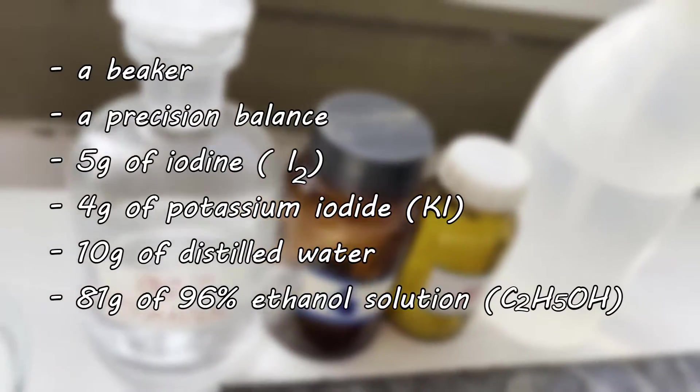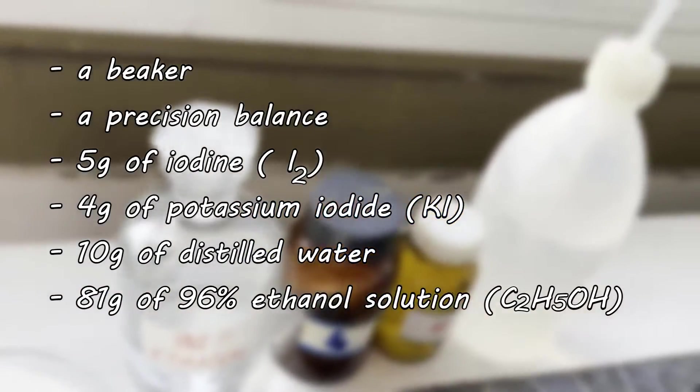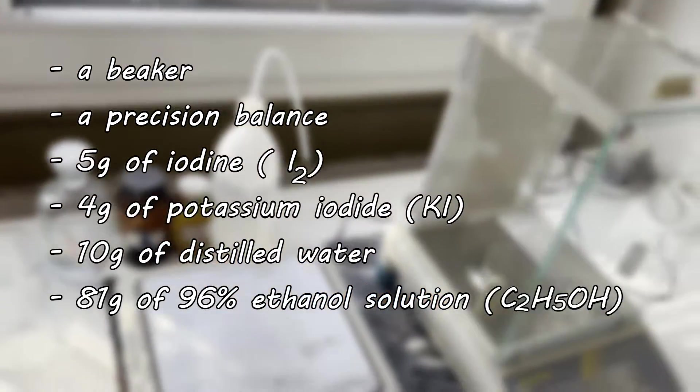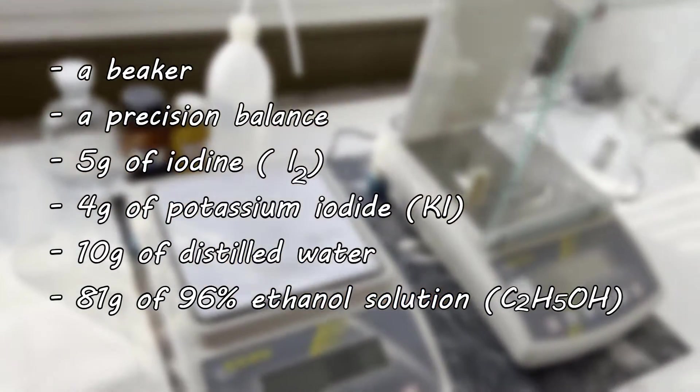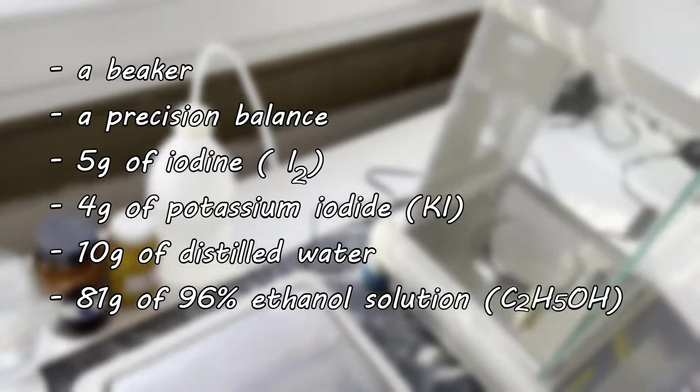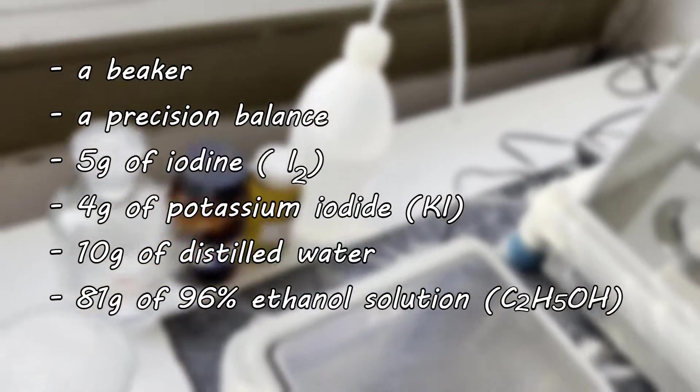For this experiment we will need a beaker, a precision balance, 5 grams of iodine (I₂), 4 grams of potassium iodide (KI), 10 grams of distilled water, and 81 grams of 96% ethanol solution (C₂H₅OH).